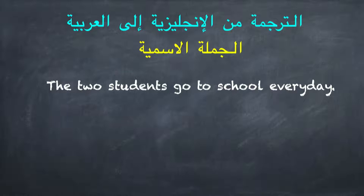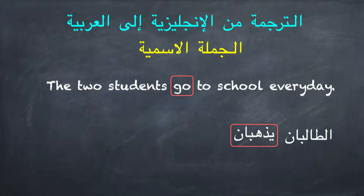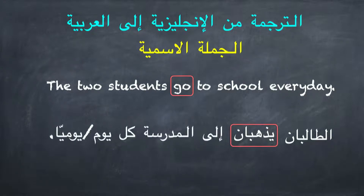انظروا الآن أعزائي إلى الجملة الآتية: 'The two students go to school everyday' — الطالبان يذهبان. انتبهوا جيداً أن الفعل 'يذهبان' جاء بعد 'الطالبان'، فلا بد أن يكون الفعل مثنى وينتهي بألف ونون. إلى المدرسة كل يوم أو يومياً. ويجوز أن نترجم نفس الجملة إلى صيغة المؤنث.